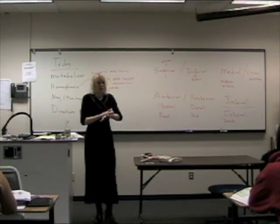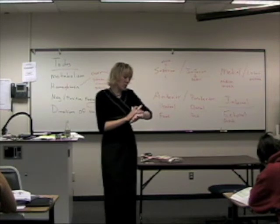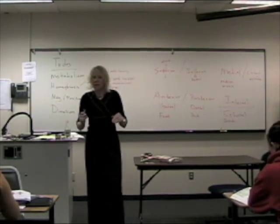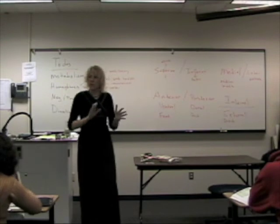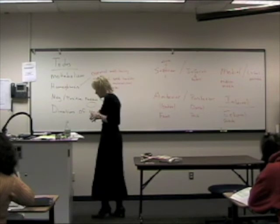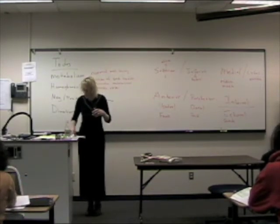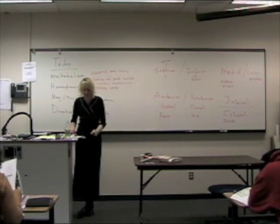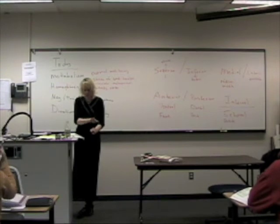Superficial means on the surface, on the outside. For example, my skin is superficial to my muscles — skin is on the outside, muscles are inside. The opposite is deep. Superficial and deep are opposites of each other. The example from the book is the deep veins of the legs, which are surrounded by the muscles — the veins are deeper than the muscles.